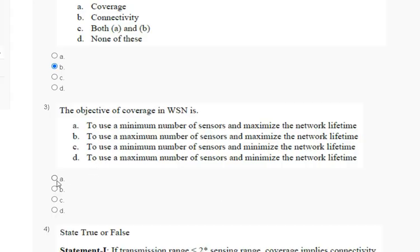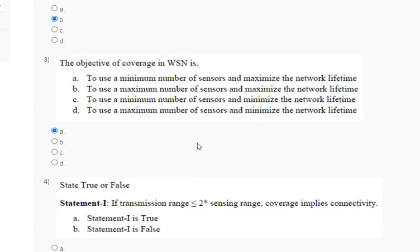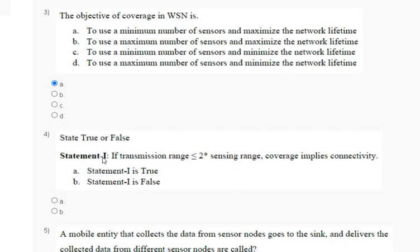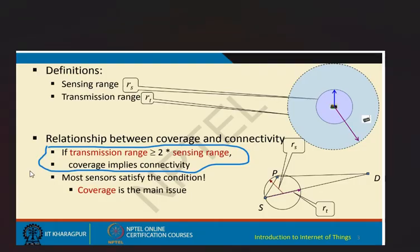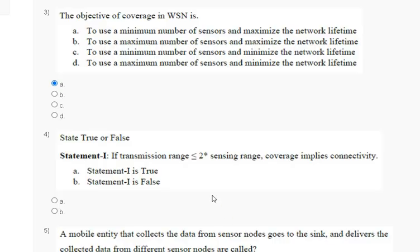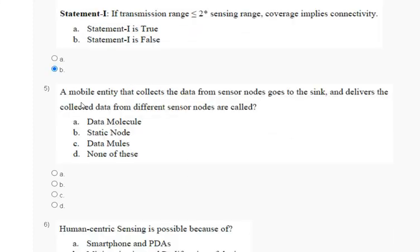Question four: state true or false — if transmission range is less than or equal to two times the sensing range, then converge implies connectivity. The explanation: if transmission range is greater than or equal to two times the sensing range, then converge implies connectivity. Since the statement says less than or equal to, the statement is false.